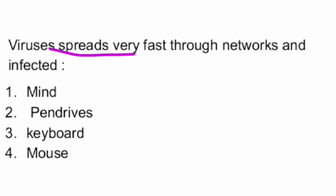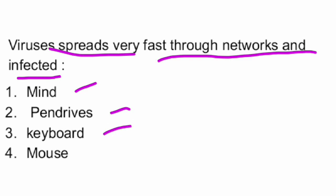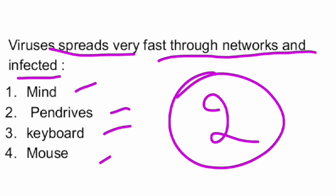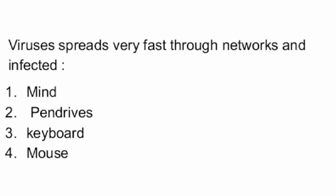Next question. Viruses spread very fast through networks and infected what? The options are: mind, pen drives, keyboard, mouse. Generally, viruses spread very fast through infected pen drives. Option 2 is the right answer.